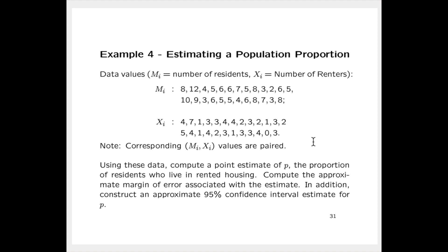Also compute the approximate margin of error associated with this estimate, and construct an approximate 95% confidence interval estimate for p, the proportion of people who live in rented housing.